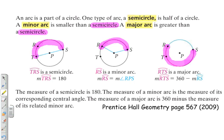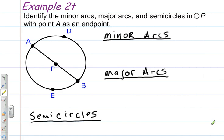So, with that in mind, we're going to just talk about identifying minor arcs, major arcs, and semi-circles in circle P, and here's a key point that A is our endpoint.